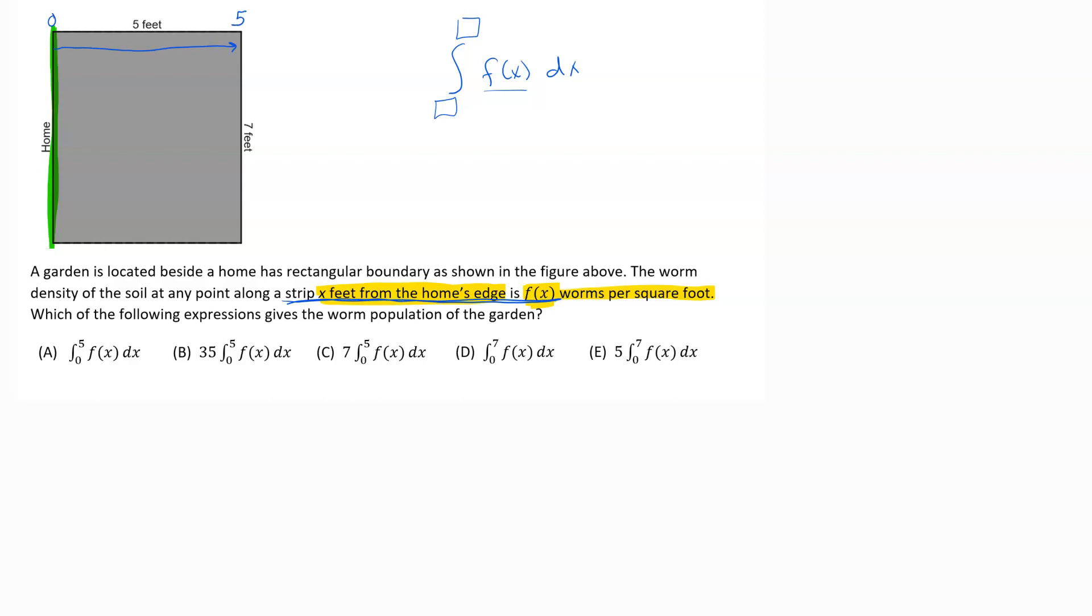The integral is going to go from zero to five. Now, what would we get out if we were just using these units here? To figure out the units on an integral problem, you look at your different pieces. What is the units on f of x? f of x is worms per square foot, so we have worms per square foot, or worms per foot squared.